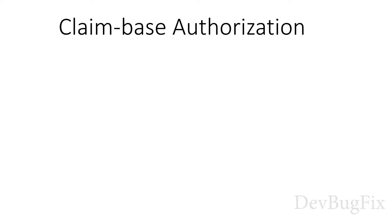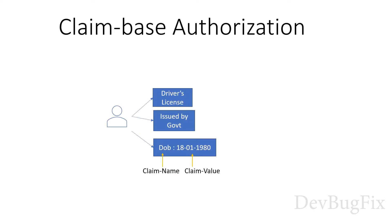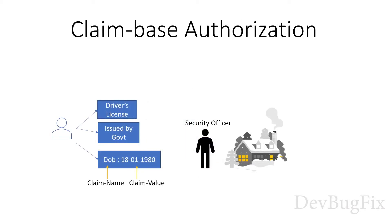Let's take an example. You have a driver's license and it is issued by the government. Your driver's license has your date of birth on it. In this case, the claim name would be date of birth and the claim value would be your date of birth. Claim based authorization, at its simplest, checks the value of a claim and allows access to a resource based upon that value. For example, you want to visit a place where the minimum age requirement is 18. You can show your driving license to the door security officer, who would evaluate the value of your date of birth claim and whether they trust the issuer before granting you access.